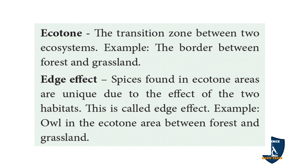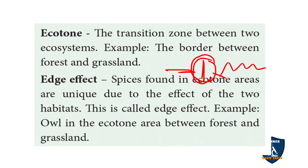Ecotone means the transition zone between two ecosystems. For example, if this is a forest ecosystem and this is a grassland ecosystem, the border between them is called the ecotone. The species found in the ecotone region are called the edge effect — they possess two habitats and can live in both grassland and forest. An example is the owl found in the ecotone area between forest and grassland.